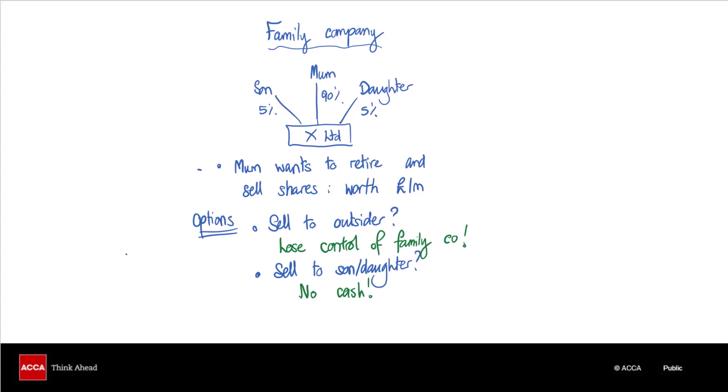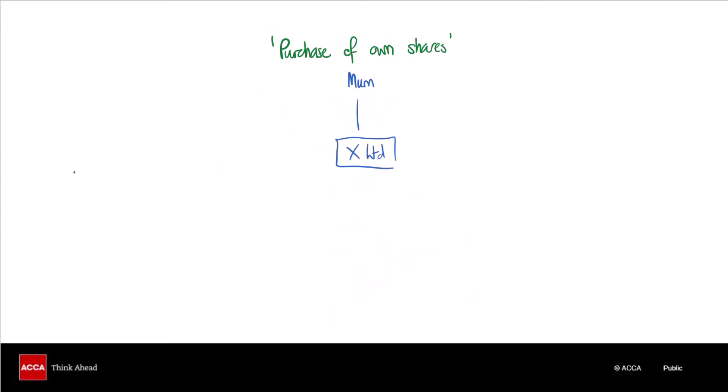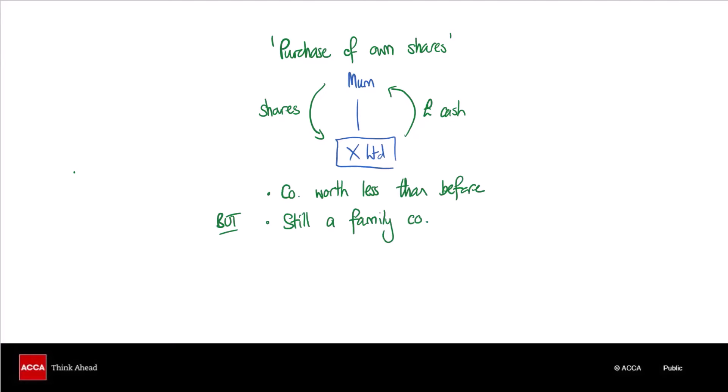The other option is that mum could sell her shares back to the company. As I said, there are certain legal procedures that would have to be followed, but in this type of situation it could be an ideal solution — otherwise known as a purchase of own shares or share buyback. What will happen is that mum will sell the shares back to the company in exchange for cash. Mum then will have the cash for her retirement. The company will of course be worth less than before, but it's still a family company, and if the son and daughter previously owned equal shareholdings, if mum sells all of the shares back they will then own 50% each.